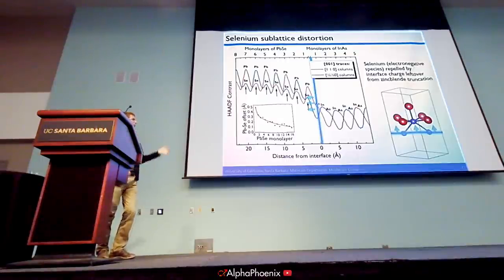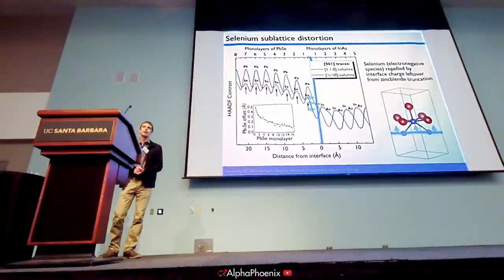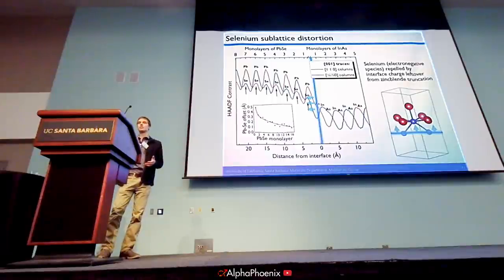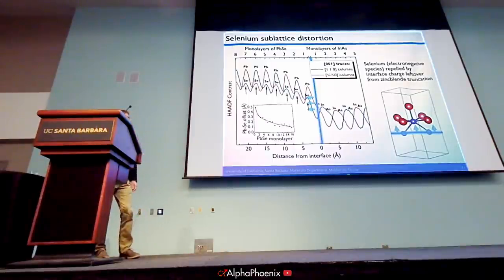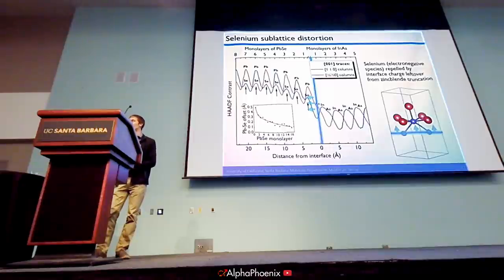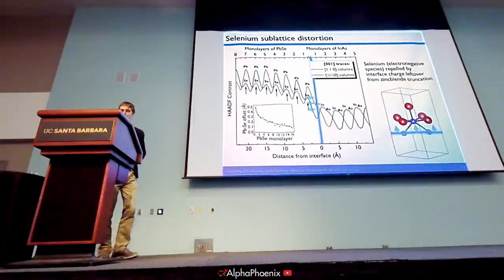I don't imagine this particular interface effect is going to be important for classical optoelectronics looking at infrared applications, but I do think it could be very important for the quantum applications of these materials. It could be extremely dependent on crystal symmetry, because now we have a distortion that breaks one of the mirror symmetries in this material in the localized region right near the interface. This is certainly not something we expected to see when we started investigating this interface, and I think it's a really interesting result that we'll definitely be keeping an eye on as we look towards quantum applications.